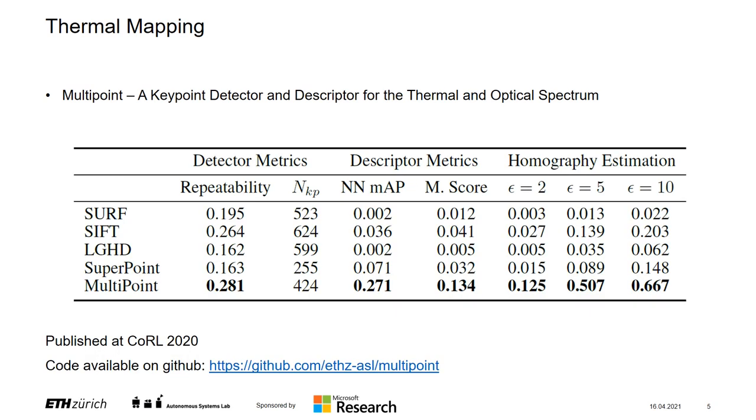On a test set of optical and thermal image pairs, Multipoint outperforms the baseline method by a wide margin, especially in the task of producing keypoints and descriptors for homography estimation. This work has been presented at the conference on robot learning last year and the code is available on GitHub.